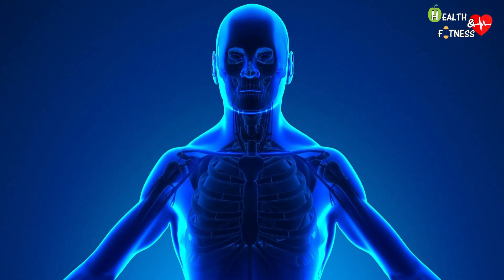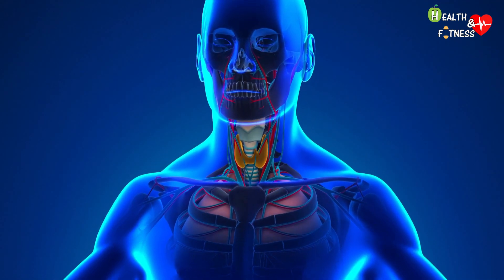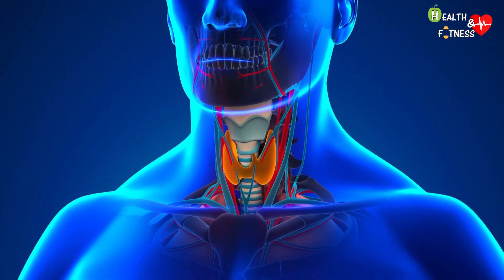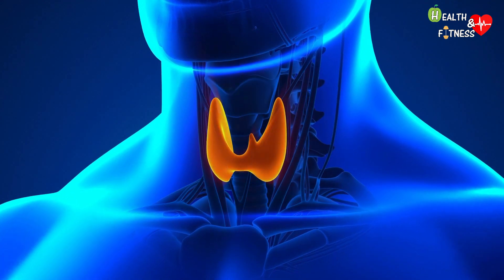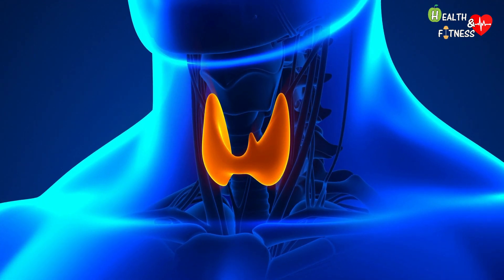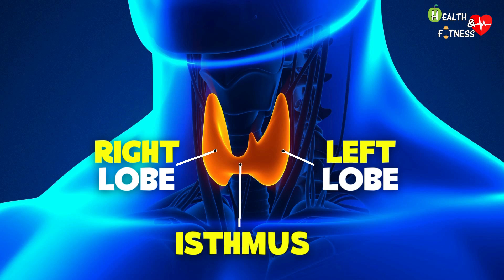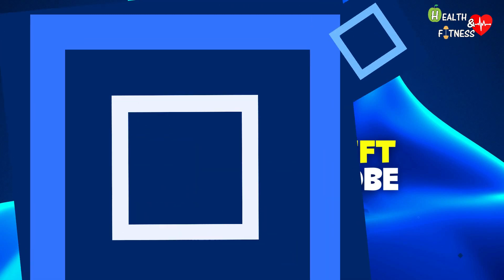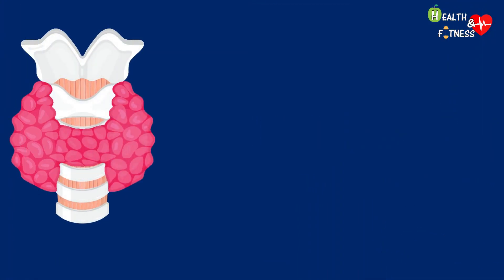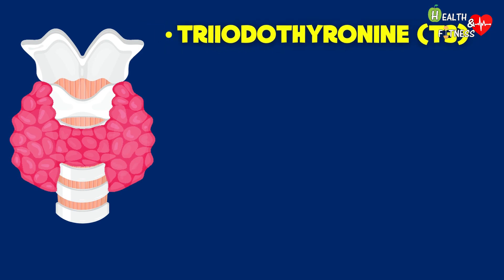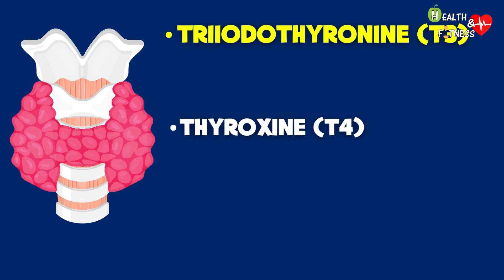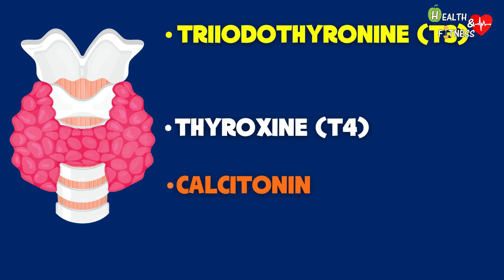The thyroid is a small butterfly-shaped, highly vascular, reddish-brown endocrine gland located in the front of the neck just below the Adam's apple. It is divided into two lobes, right and left, joined together by a central part called the isthmus, and overall has a weight of around 20 grams. The thyroid belongs to the endocrine system and has the task of producing thyroid hormones, in particular triiodothyronine T3, thyroxine T4, and calcitonin.